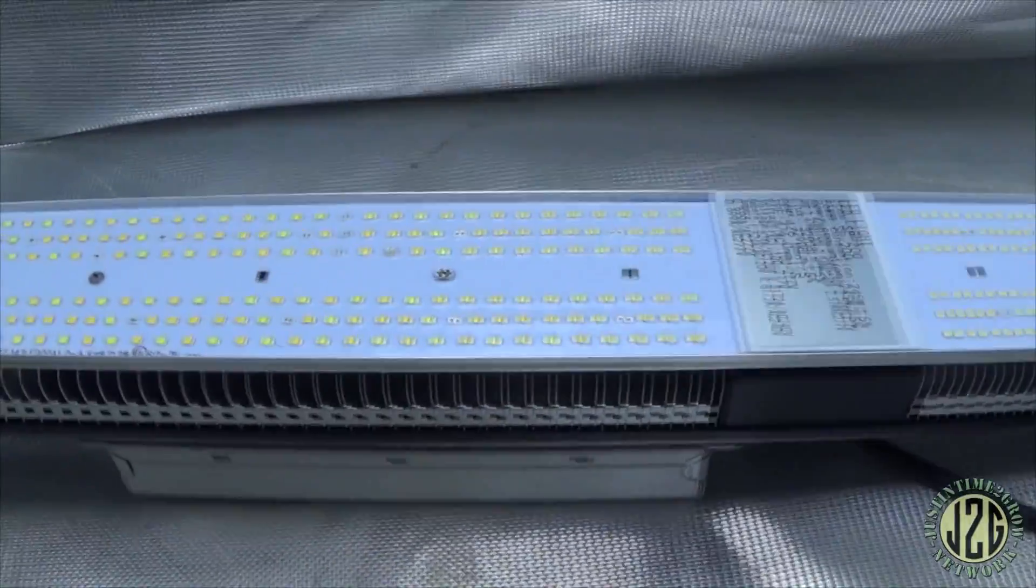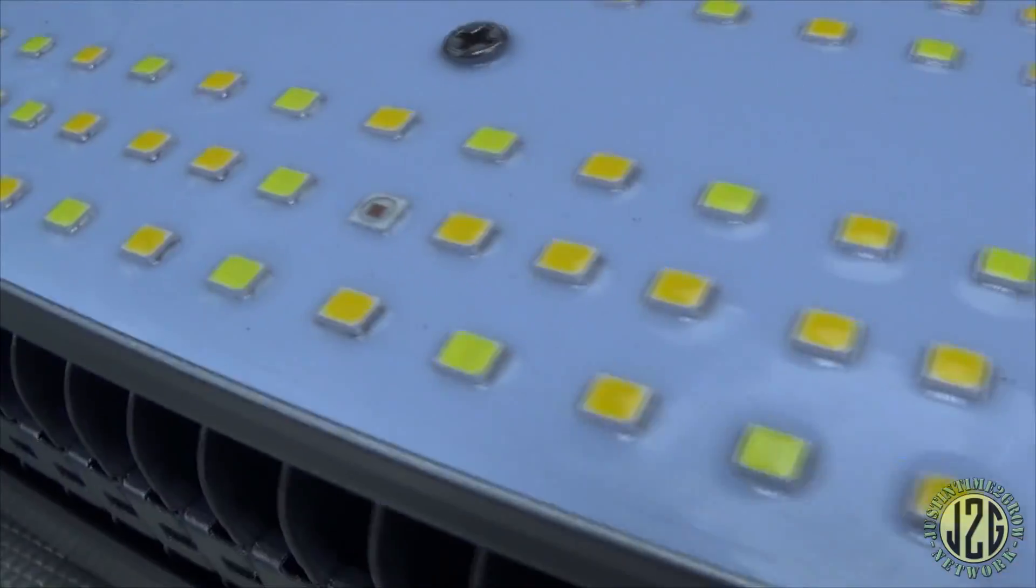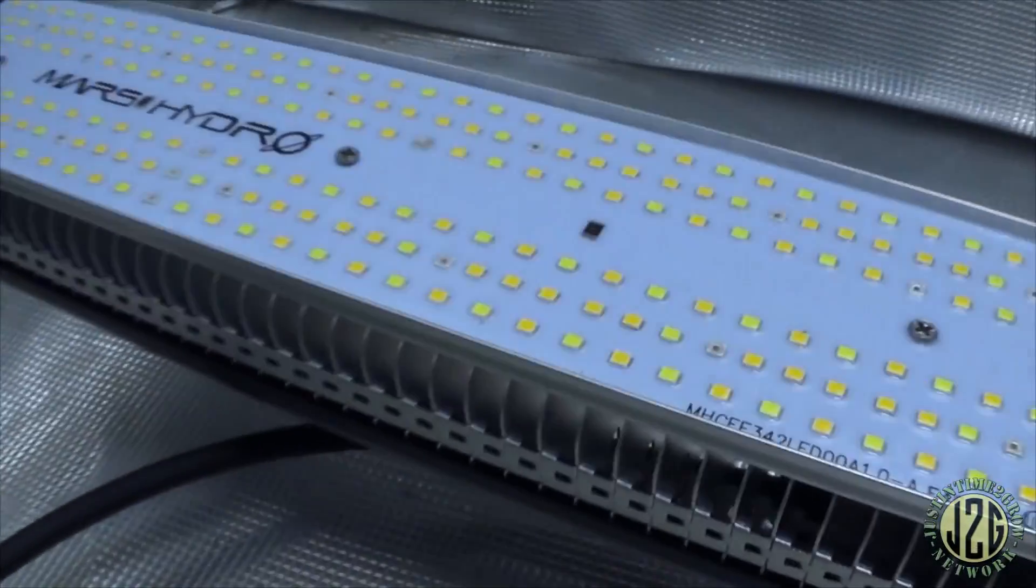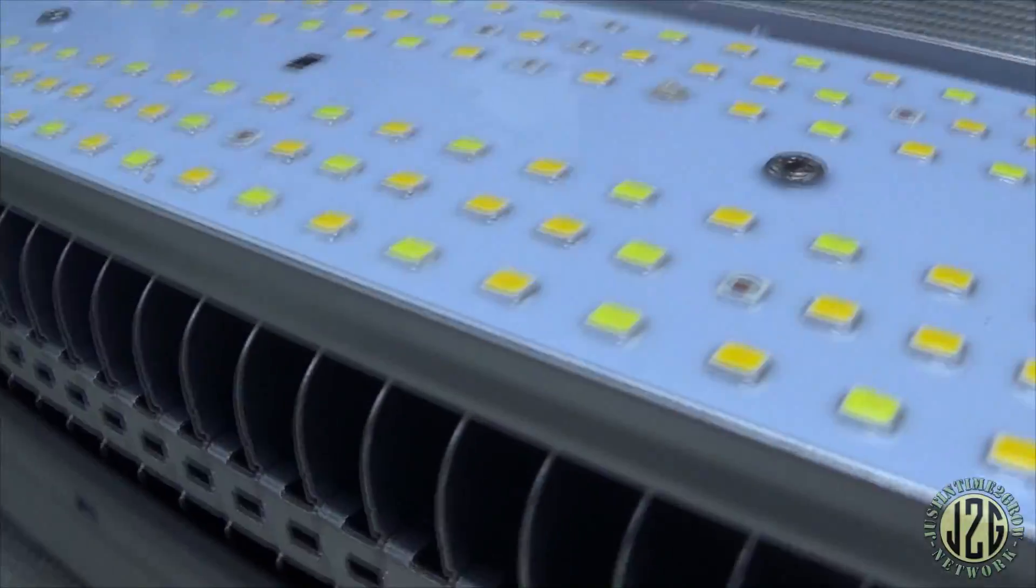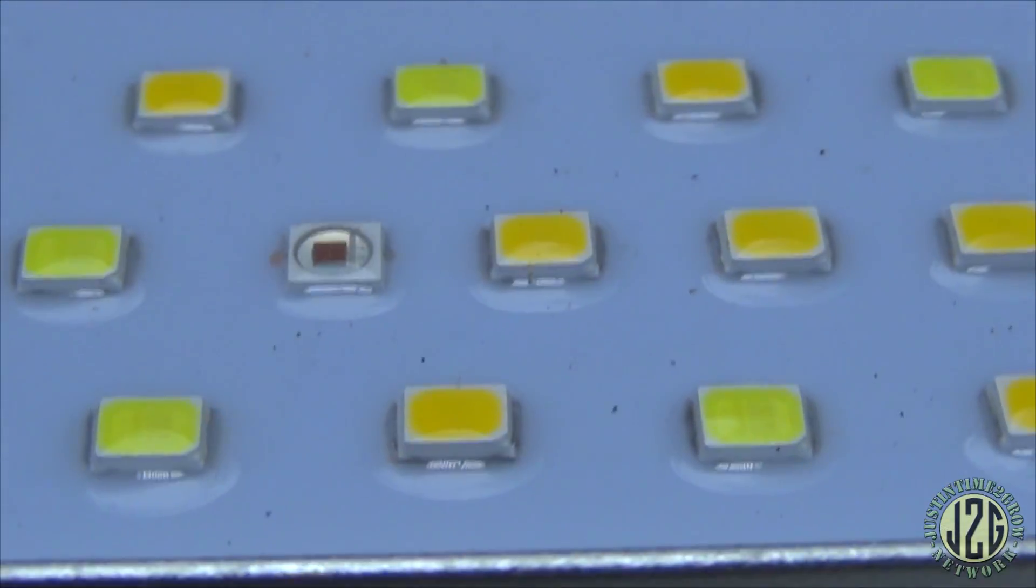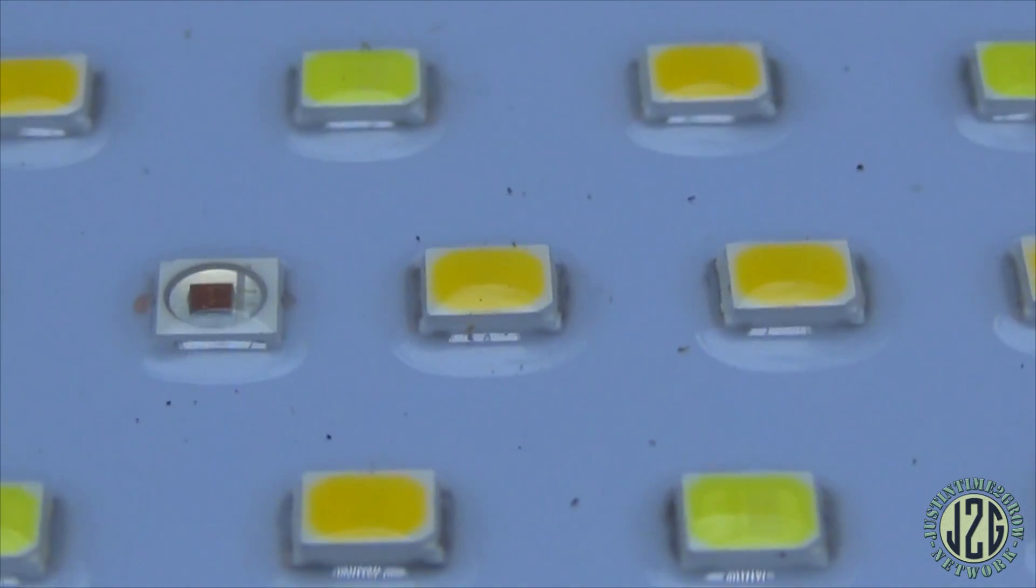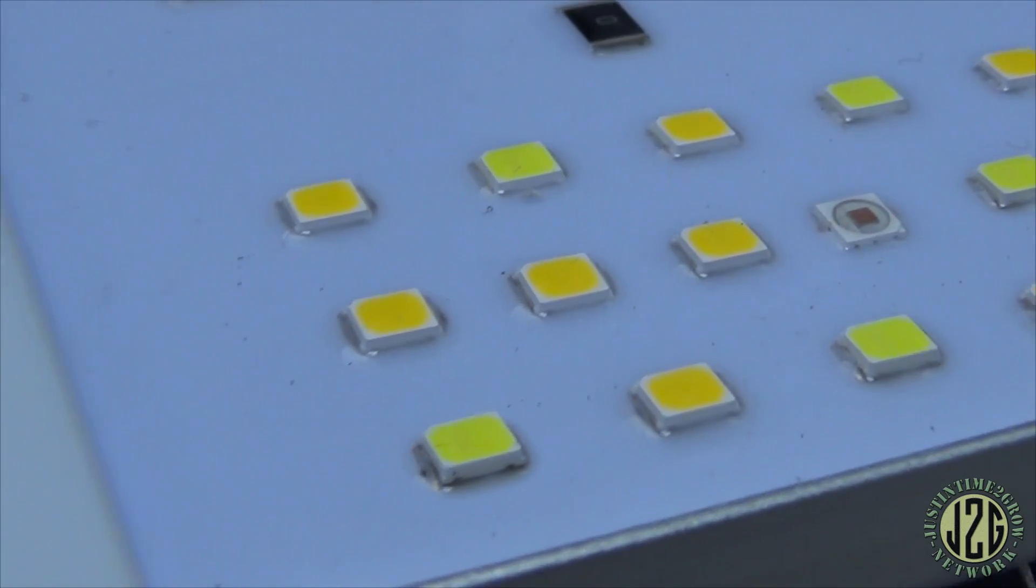Make sure I don't touch the diodes there - you don't want to get any sort of your finger oils or anything on the diodes. Although this light boasts, and as you can see I don't know if I can get a good angle at it, you can see kind of the sheen off of these - this whole light is supposed to be waterproof. Whether or not I'm going to test that, I'm not really sure. I don't know if I want to go spraying water on my new light.